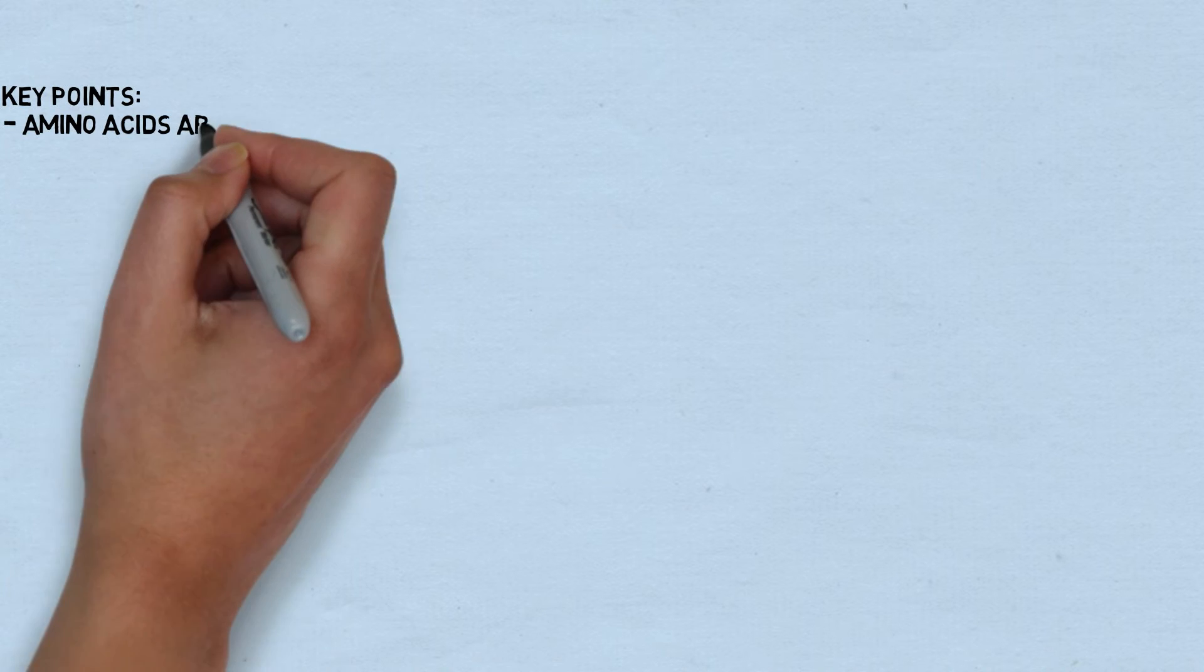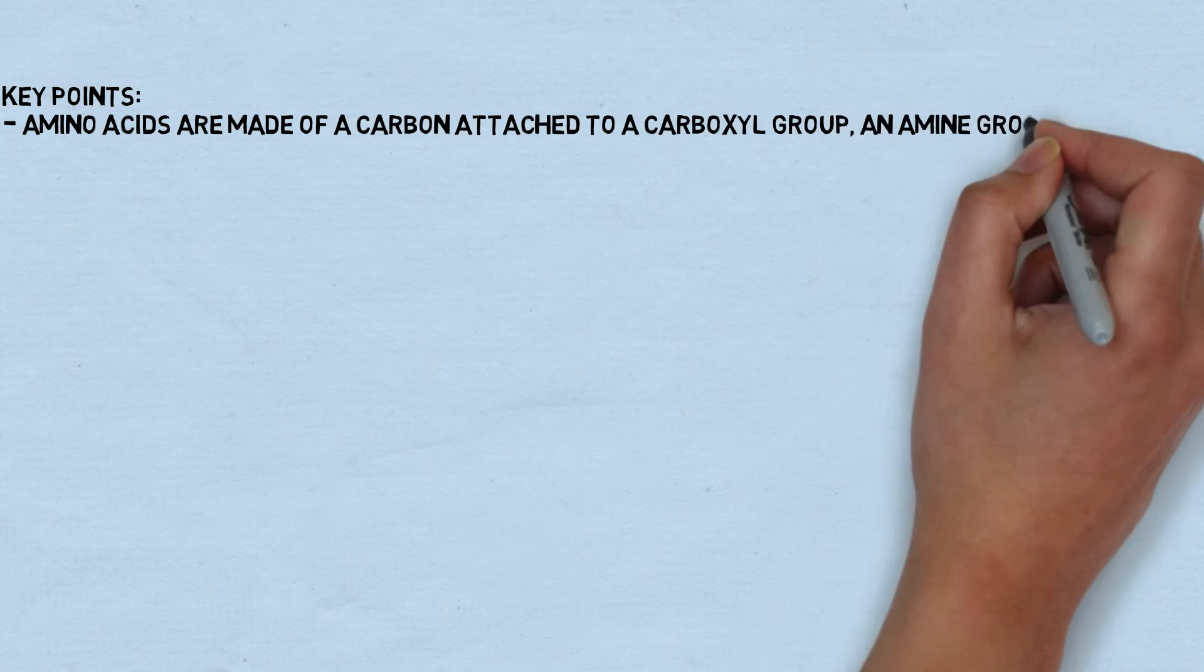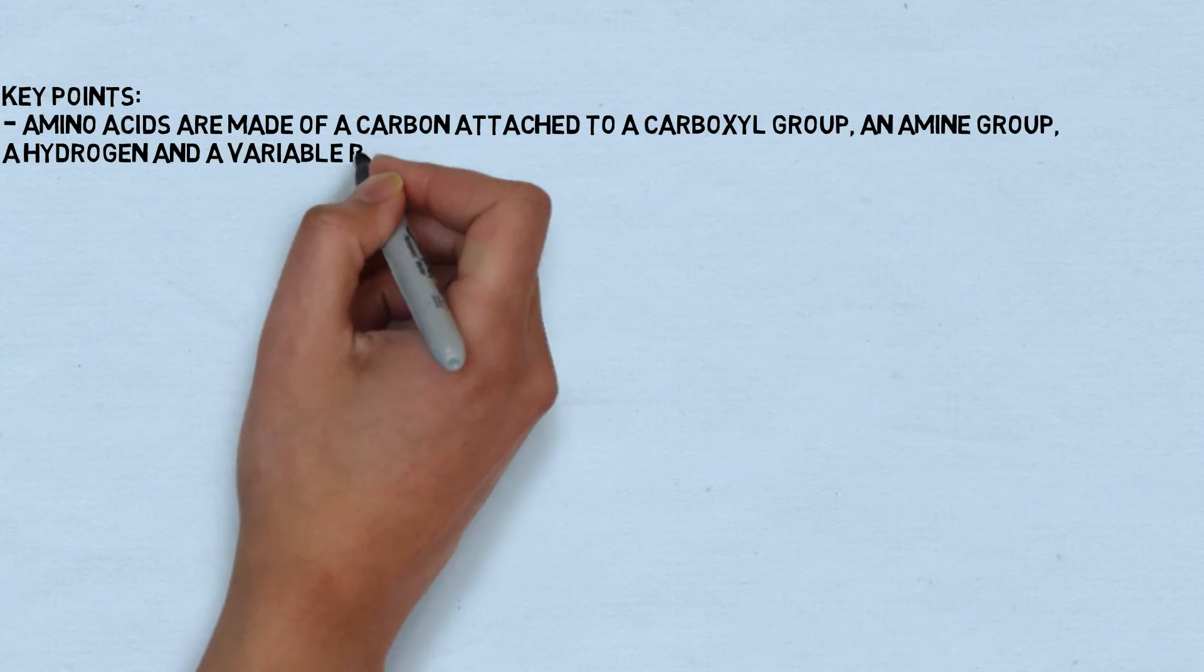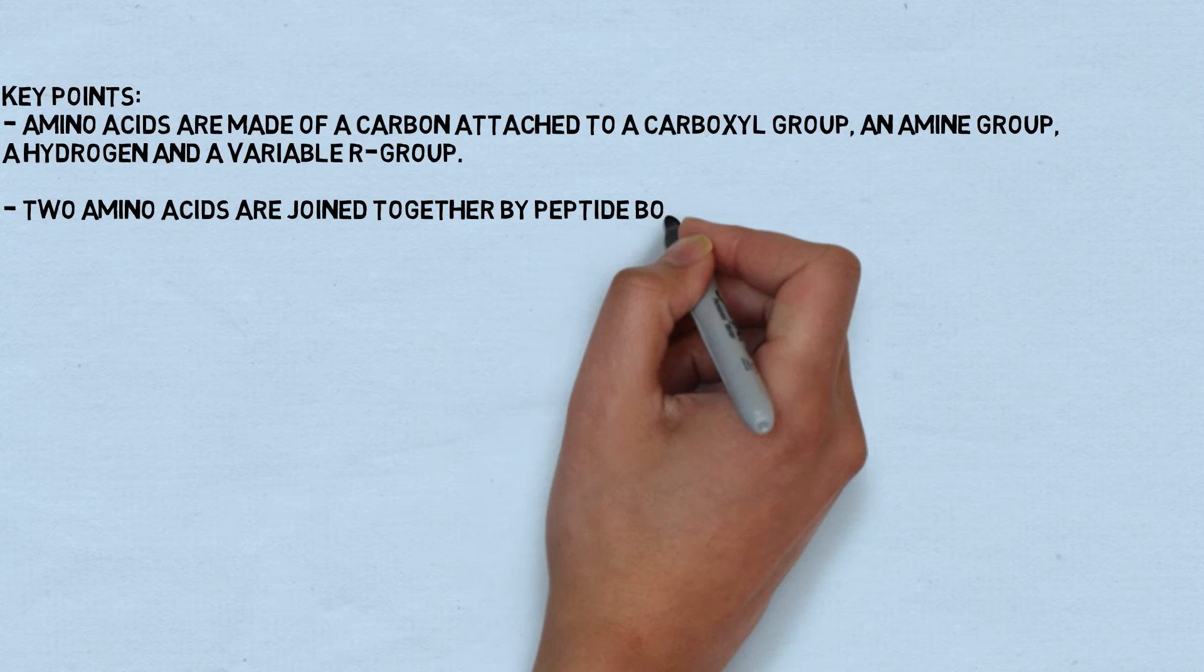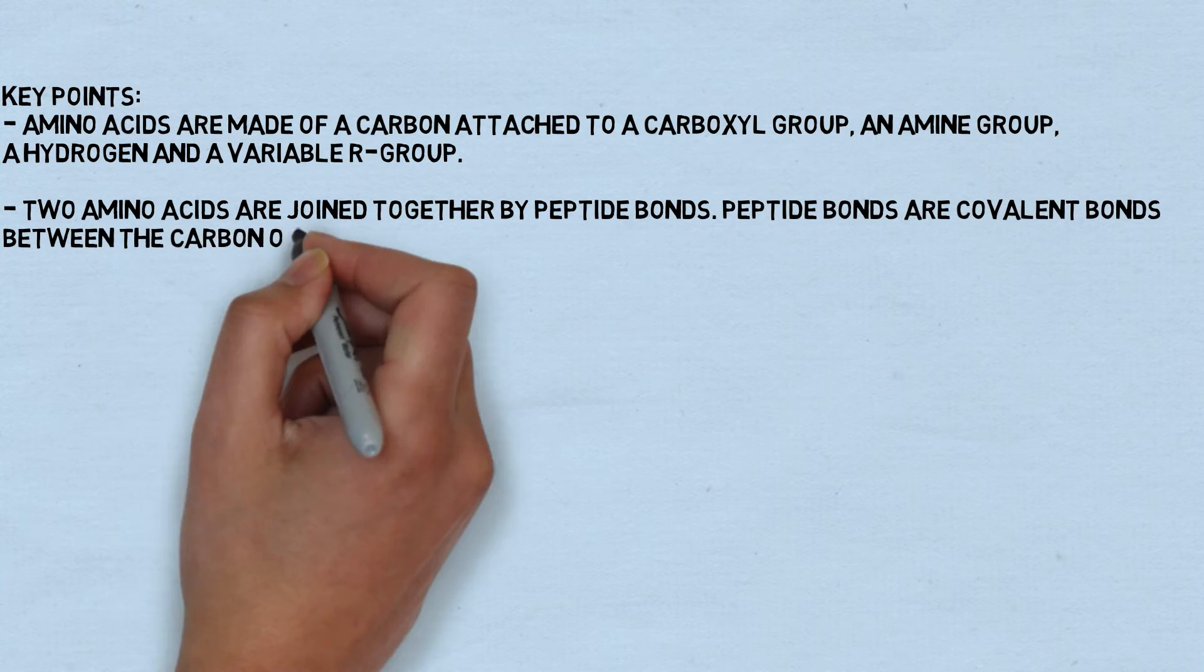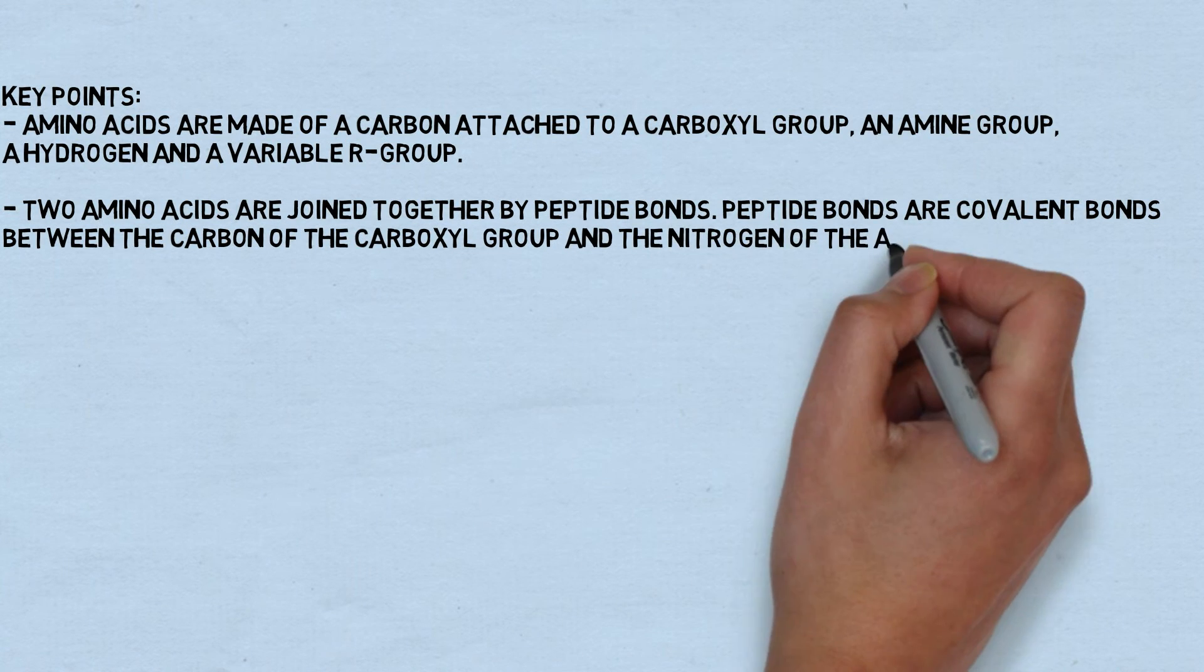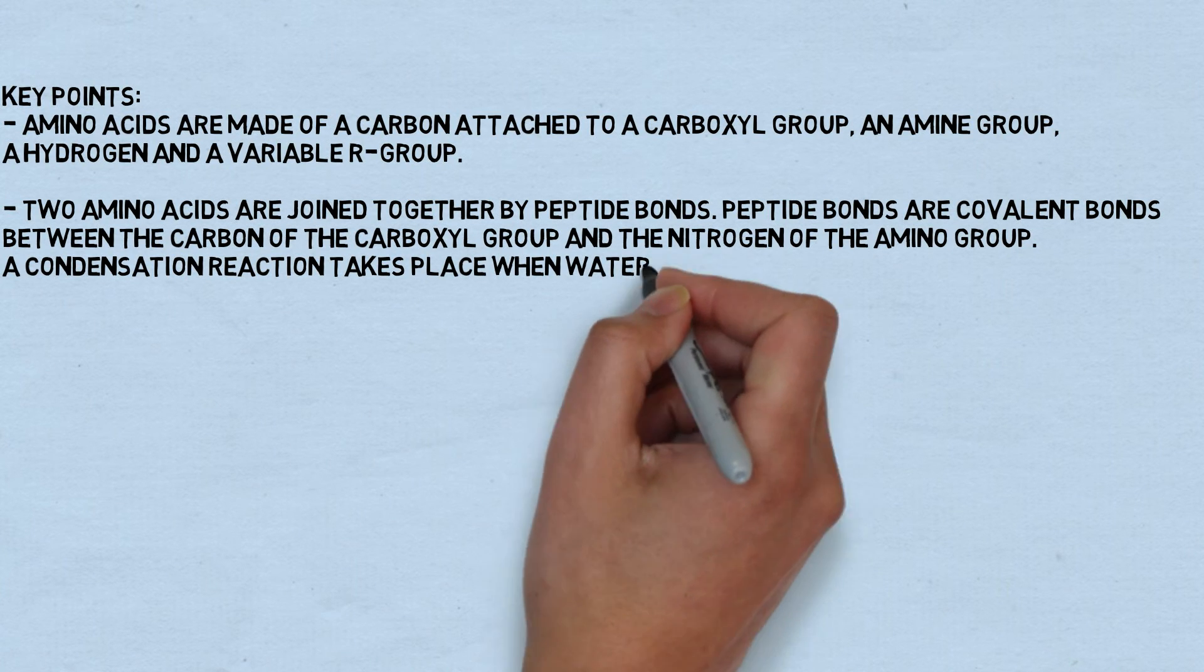The key points to remember are amino acids are made of a carbon attached to a carboxyl group, an amine group, a hydrogen and a variable R group. Two amino acids are joined together by a peptide bond. Peptide bonds are covalent bonds between the carbon of a carboxyl group and the nitrogen of the amino group. A condensation reaction takes place where water is lost from the bond.